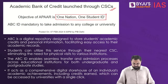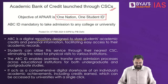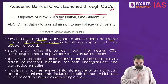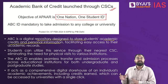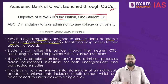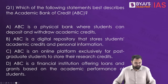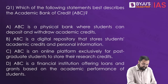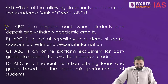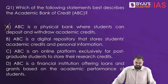So this is something that was in the news. Just remember: it is a digital repository designed to store students' academic credits and personal information. They are looking to create a single unique ID which will have all the academic information for any given student. Now looking at the question, which has four options — the first is that it is a physical bank where students can deposit and withdraw academic credits. That sounds absurd and should not be the correct answer. The second statement says ABC is a digital repository that stores students' academic credits and personal information. This looks correct.